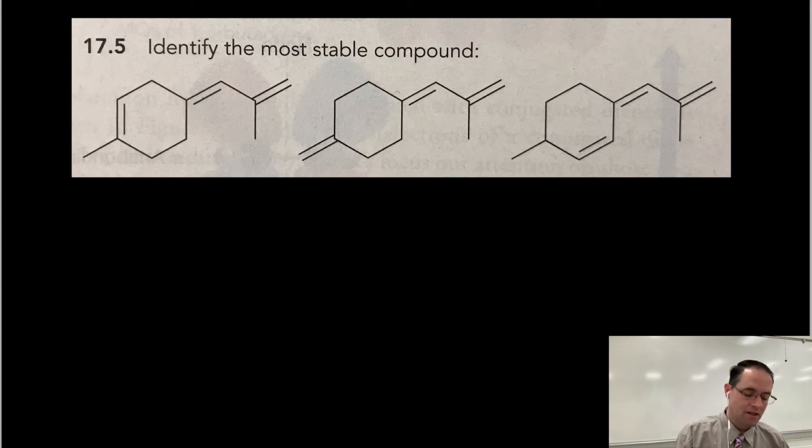So again, I'll use my highlighter here to just identify the number and type of bonds that are present here. So here's a pi bond, pi, pi. Here's a pi bond, pi, pi. Here's a pi bond, pi, pi. So I'm highlighting the carbon-carbon pi bonds.